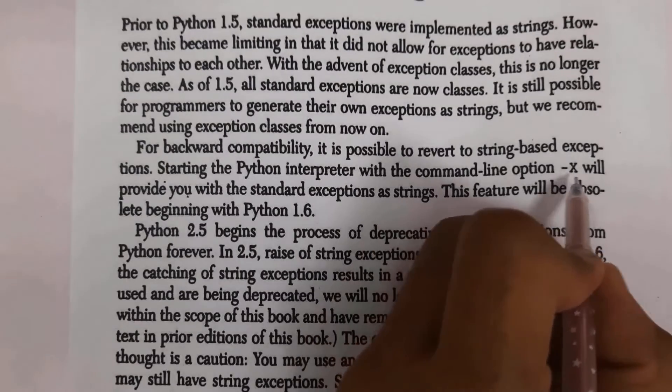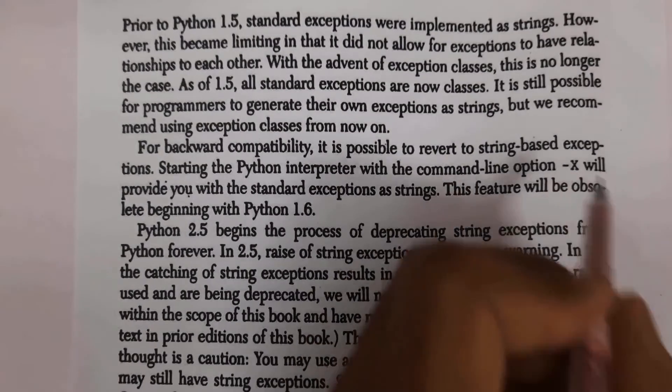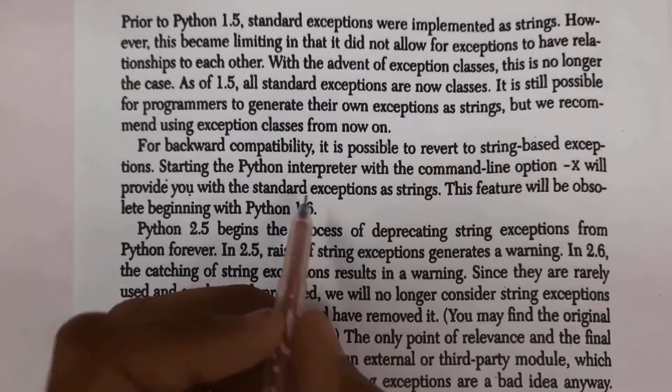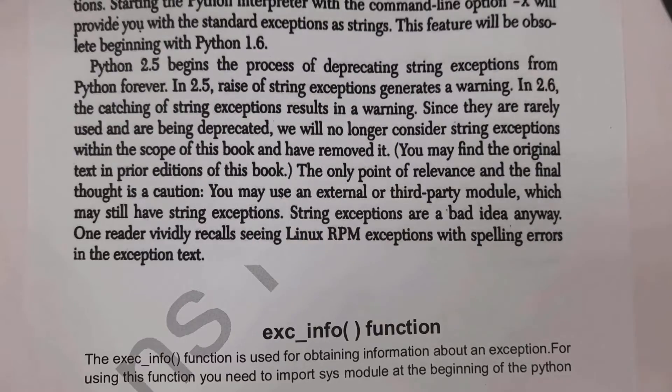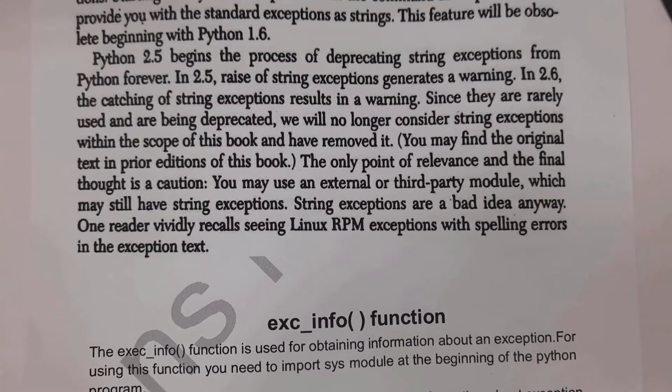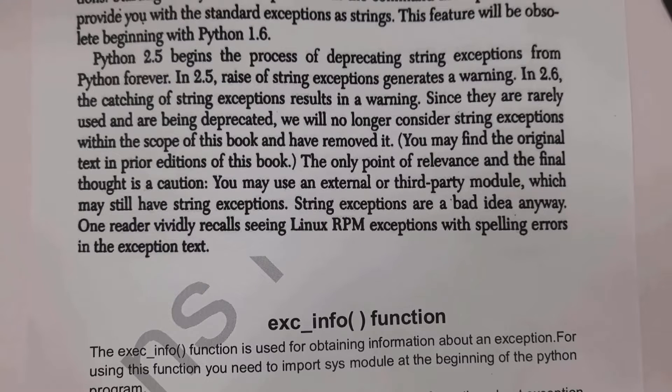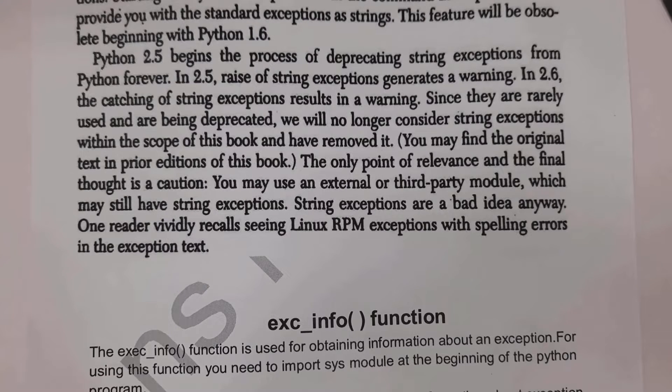When Python version 2.5 began, they removed string exceptions completely. From Python version 2.5, users cannot create any string exceptions because there is no relationship between strings and exceptions. String exceptions are a bad idea.